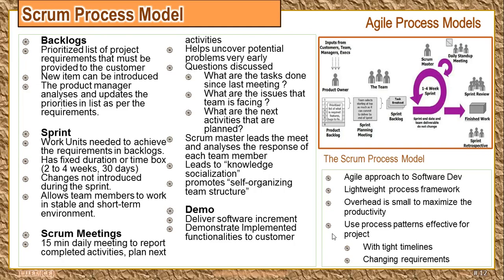Backlogs are the part of the diagram where the client features are listed — essentially all the functional requirements that a client wants. The clients communicate with someone called the product owner, who is a member of the software development or Scrum team. The product owner communicates with the customer, team, managers, and all other stakeholders, and gives input into the product backlog. The backlog is a prioritized list of requirements. New requirements can be introduced anytime as per the principle of agility, and the product manager will analyze and update priorities as needed.